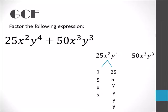Now let's look at our second term, 50x cubed y cubed. Factors of 50 are 1 and 50, 2 and 25, and 5 and 10. x cubed can be rewritten as 3 x's being multiplied to each other and y cubed as 3 y's.